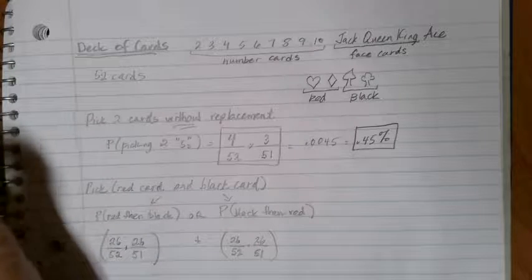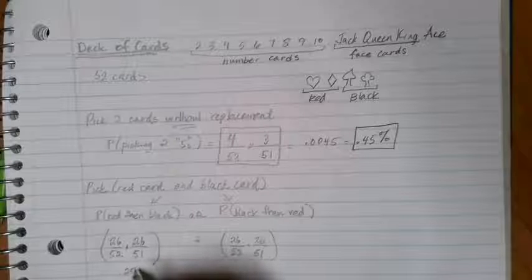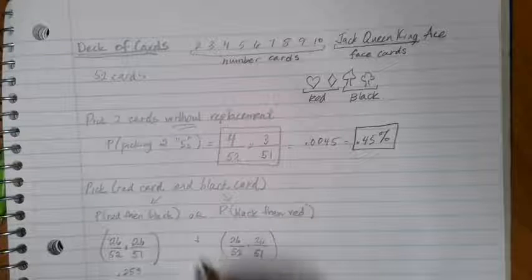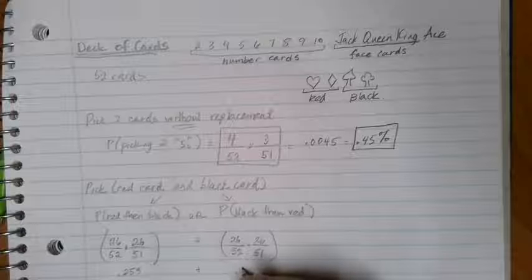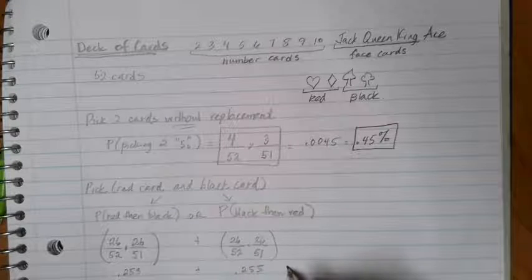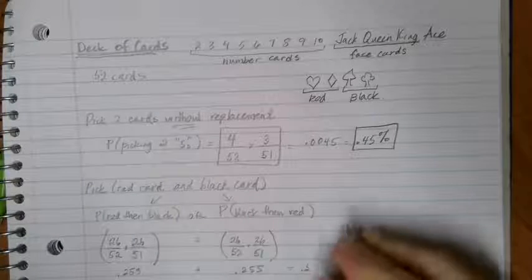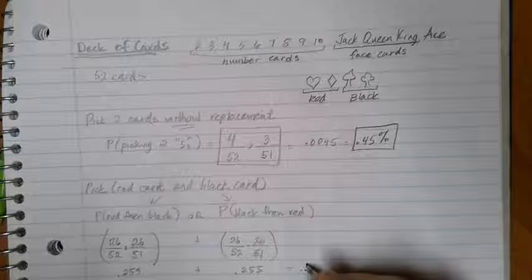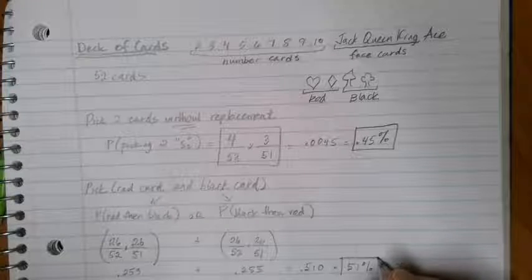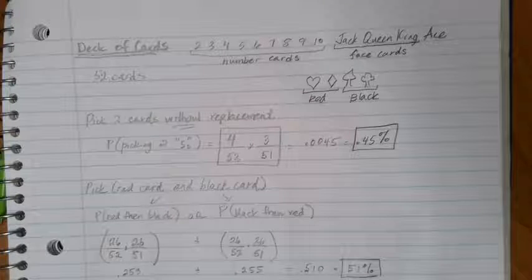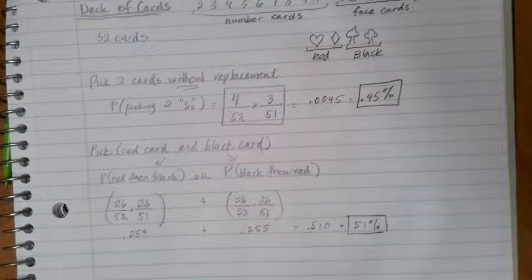So I can do 26 divided by 52 times 26 divided by 51, which gives me a 0.255 chance, or a 25.5% chance of getting red then black. If I multiply these together, I also am going to get 0.255. And so altogether there is a 0.510 or 51% chance of that happening, of ending up with a red card and a black card in my hand when I'm done. Thank you.